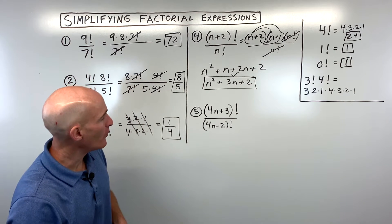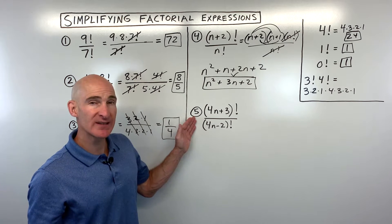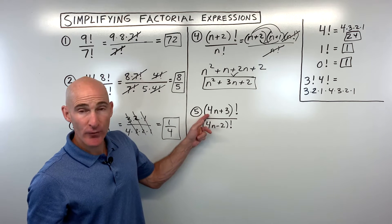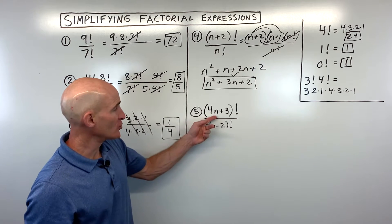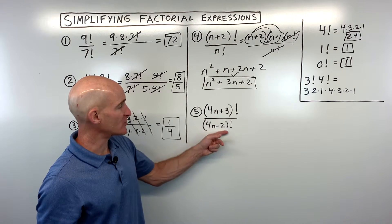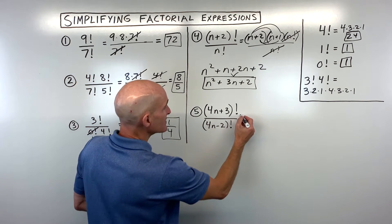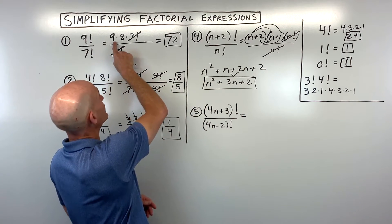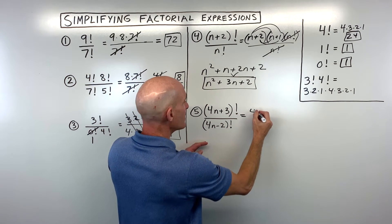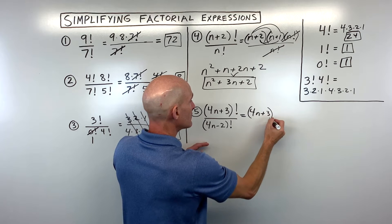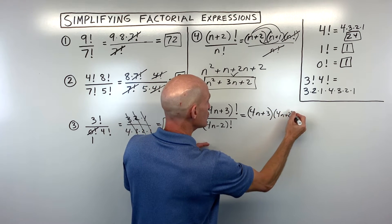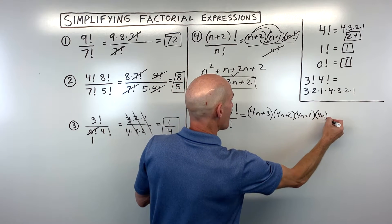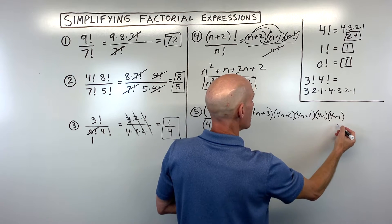For example number five, we have 4n plus three factorial over 4n minus two factorial. The 4n plus three is larger — say if n was one, this is seven versus two. Starting with the numerator: 4n plus three, subtract one gives 4n plus two, then 4n plus one, then 4n, then 4n minus one, then 4n minus two factorial.